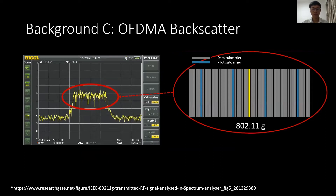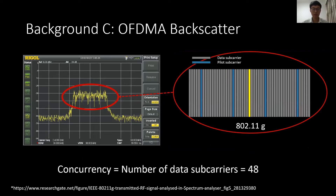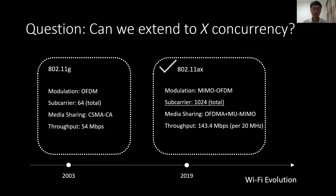OFDMA backscatter addressed the connection capacity issue by assigning different data subcarriers to different tags by letting them perform different frequency shifts. Since the framework is based on 802.11g protocol, the total concurrency is limited by the number of data subcarriers, that is 48. This number still cannot meet the requirements of the industry. Wi-Fi has evolved to 802.11ax protocol, which provides 1,000-level subcarriers, so hopefully our backscatter network can achieve 100-level and even 1,000-level concurrency.